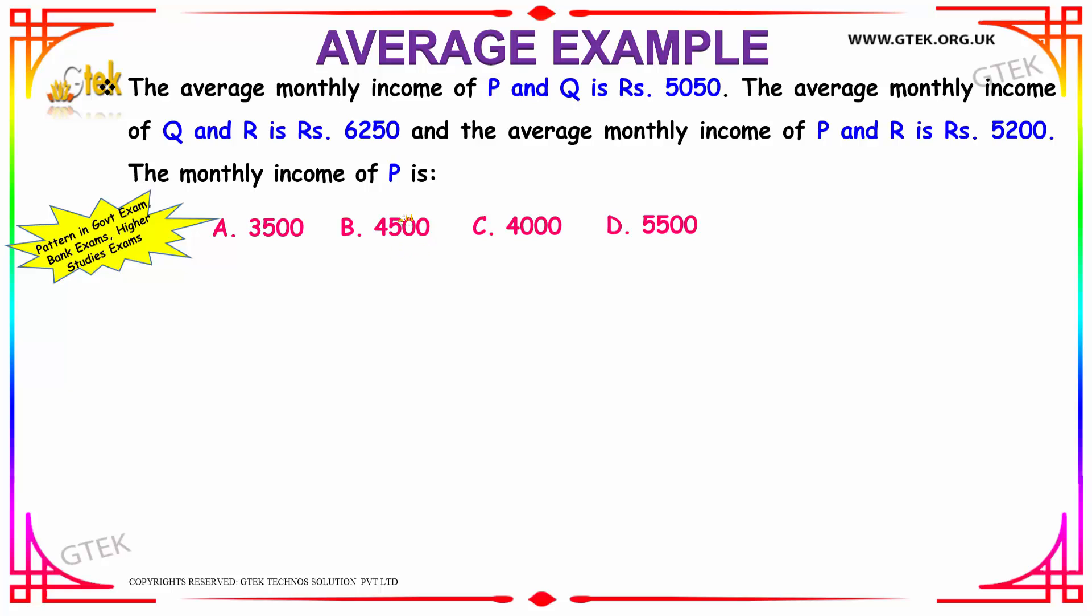The average monthly income of P and Q is given to be Rs. 5050. The average monthly income of Q and R is given to be Rs. 6250, and the average monthly income of P and R is Rs. 5200. We have to find the monthly income of P. That's our question.